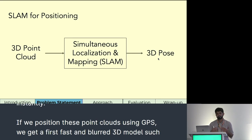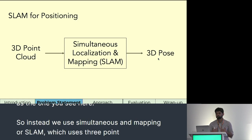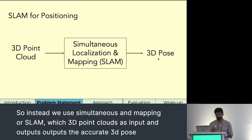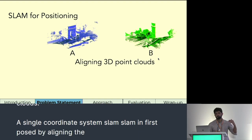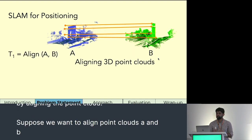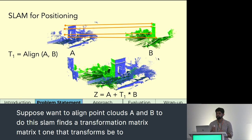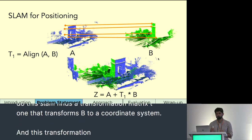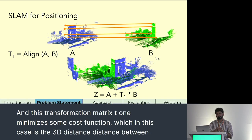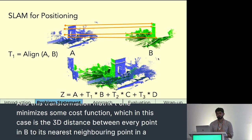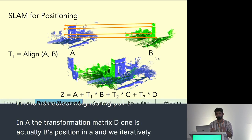So instead, we use simultaneous localization and mapping, or SLAM, which uses 3D point clouds as input and outputs the accurate 3D pose of those point clouds in a single coordinate system. SLAM infers pose by aligning the point clouds. Suppose we want to align point clouds A and B. SLAM finds a transformation matrix T1 that transforms B to A's coordinate system, minimizing the 3D distance between every point in B to its nearest neighboring point in A. T1 is actually B's position in A, and we iteratively match new point clouds to A and append them together.